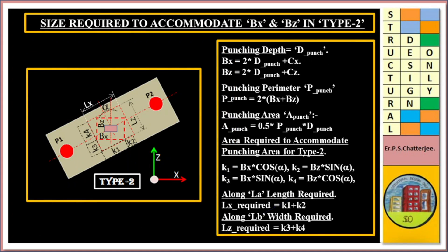Punching depth D_punch. BX = 2 × D_punch + CX. BZ = 2 × D_punch + CZ. Punching perimeter C_punch = 2 × (BX + BZ). Punching area A_punch = 0.5 × C_punch × D_punch. For area required to accommodate punching area for Type 2: K1 = BX × cos(alpha), K2 = BZ × sin(alpha), K3 = BX × sin(alpha), K4 = BZ × cos(alpha). Along LX: length required = K1 + K2. Along LB: width required LZ = K3 + K4.